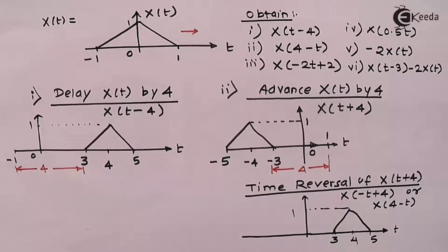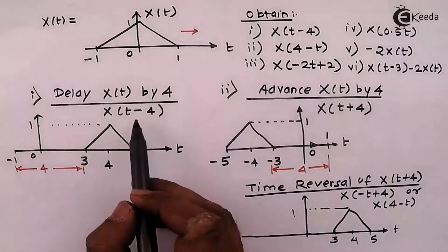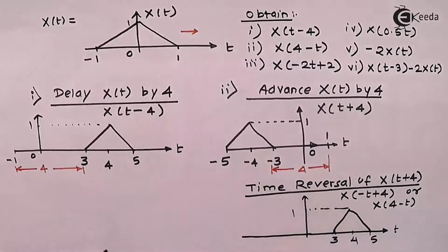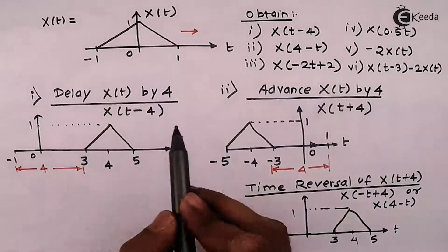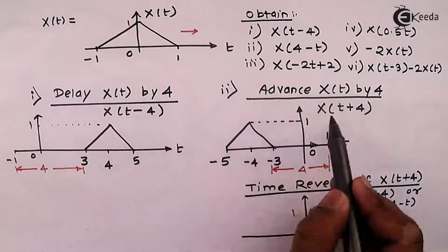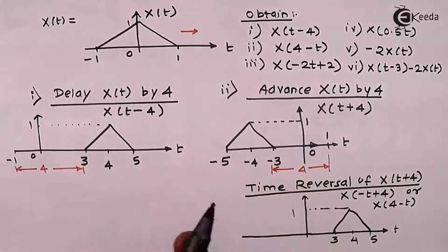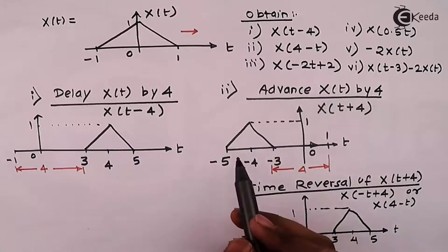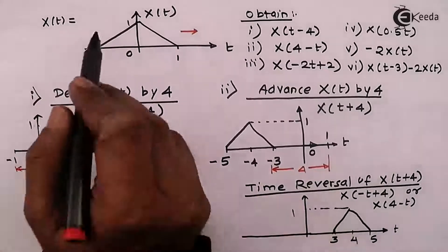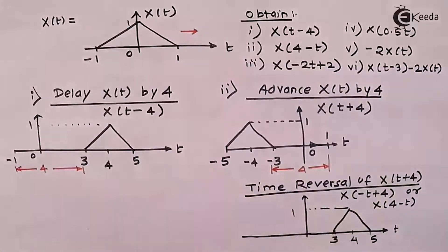Remember, by coincidence these two signals may look the same but you cannot establish any relationship between them. For every second operation, we neglect whatever was done earlier — every operation you take as a fresh operation starting from X of t. So this is the answer for X of 4 minus t.